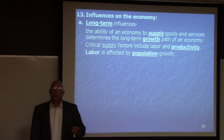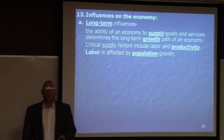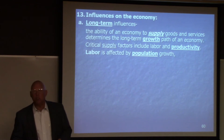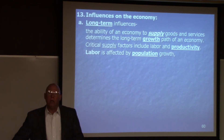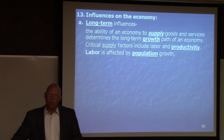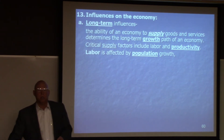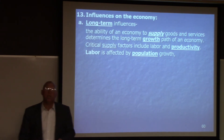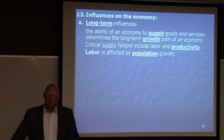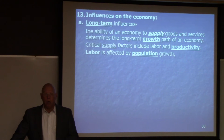Labor is affected by population growth. China has removed the one-child policy because their labor force is rapidly aging and they need more young people. As economies start to mature, they tend to have fewer children and the demographics change — and that could be dangerous. Japan is probably the oldest in terms of population and they are having serious economic challenges. The U.S. is moving into that as well.